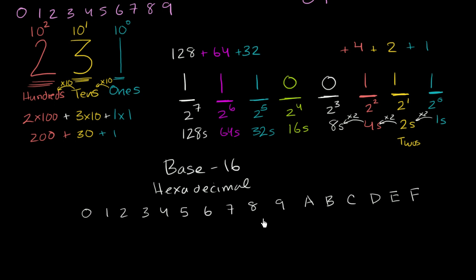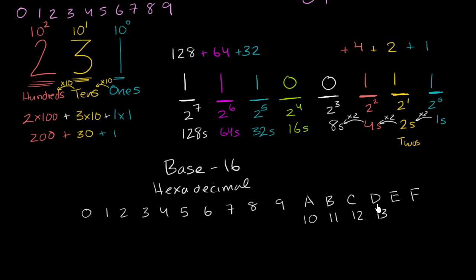These are just arbitrary symbols. You've grown to associate the symbol eight with eight things. So if you're thinking in hexadecimal, A represents 10 things, B represents 11, C represents 12, D represents 13, E represents 14, and F represents 15.